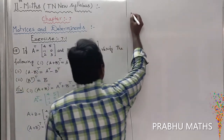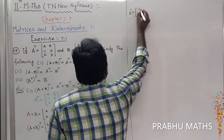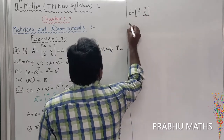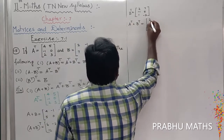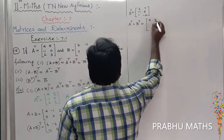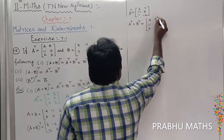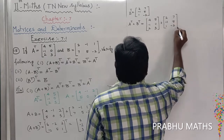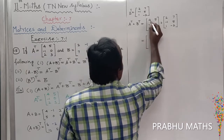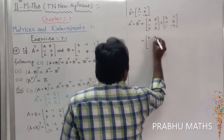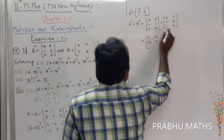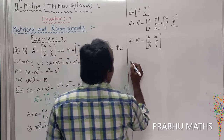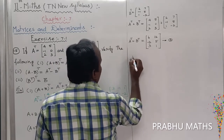Next, find the value of B transpose. B transpose equals 2, minus 1, 1, 7, 5, minus 2 transposed. Then A transpose plus B transpose: A transpose is 4 5, minus 1 0, 2 3, plus B transpose 2, 7; minus 1, 5; 1, minus 2. Adding corresponding entries: 6, 12, minus 2, 5, 3, 1. That is equation number 2.